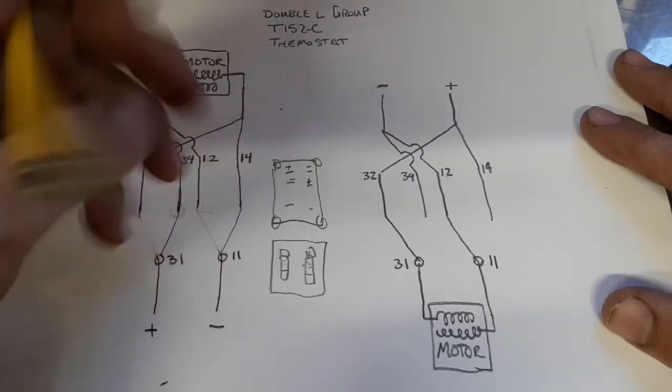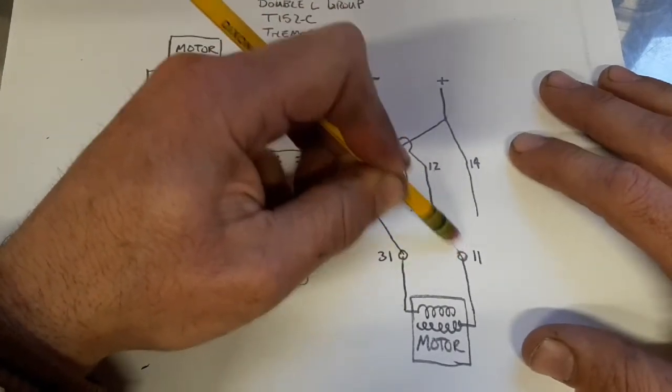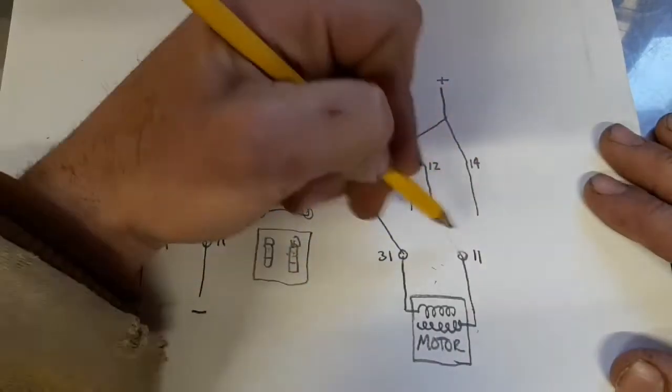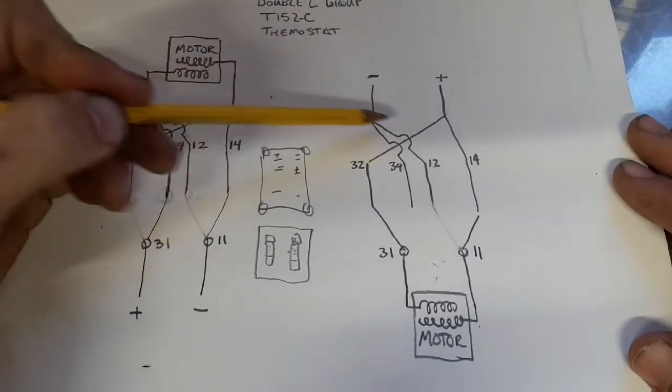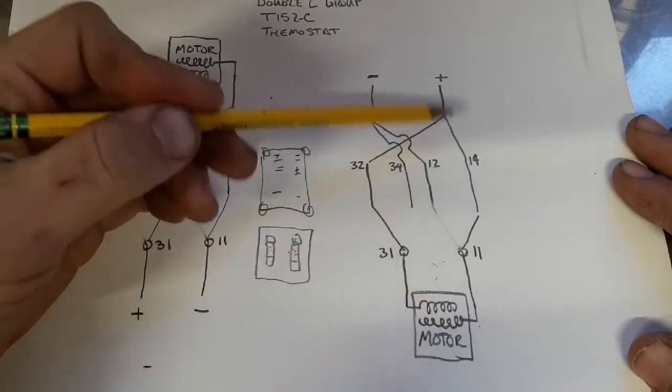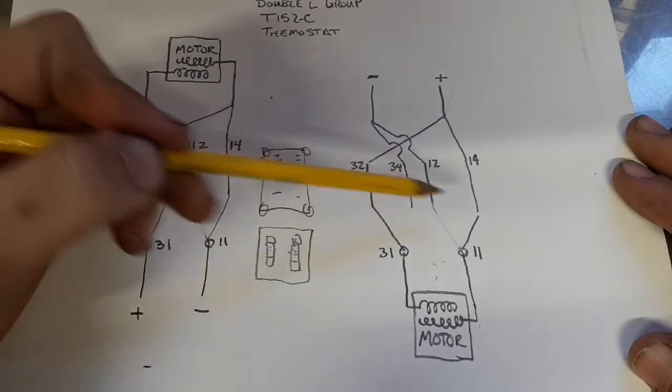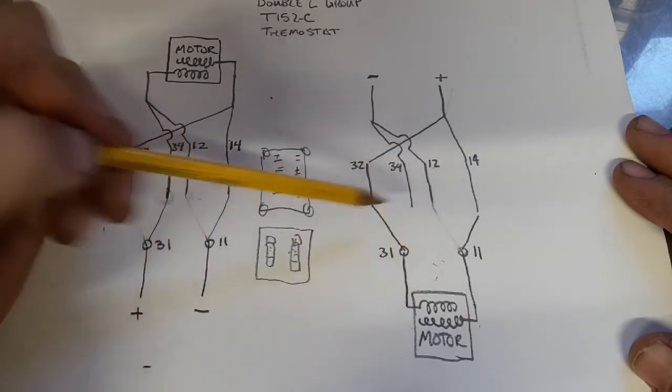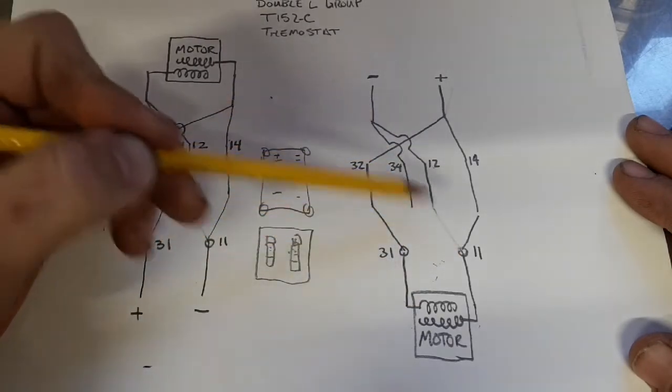Now, the worst that can happen is that if I have them pop out of order, like this, now I've got a positive going to both sides of a motor. If the other one, if this one's here, and then this one pops here, I'll just have negatives going.